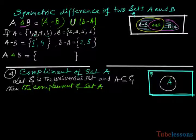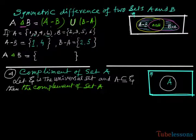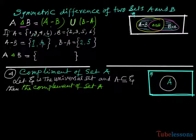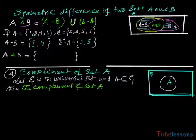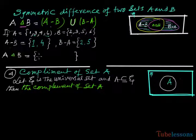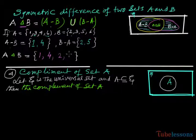If A contains {1, 3, 4, 6} and B contains {2, 3, 5, 6}, then 3 and 6 are common. So A minus B is {1, 4} and B minus A is {2, 5}. Therefore A delta B contains {1, 4, 2, 5}.